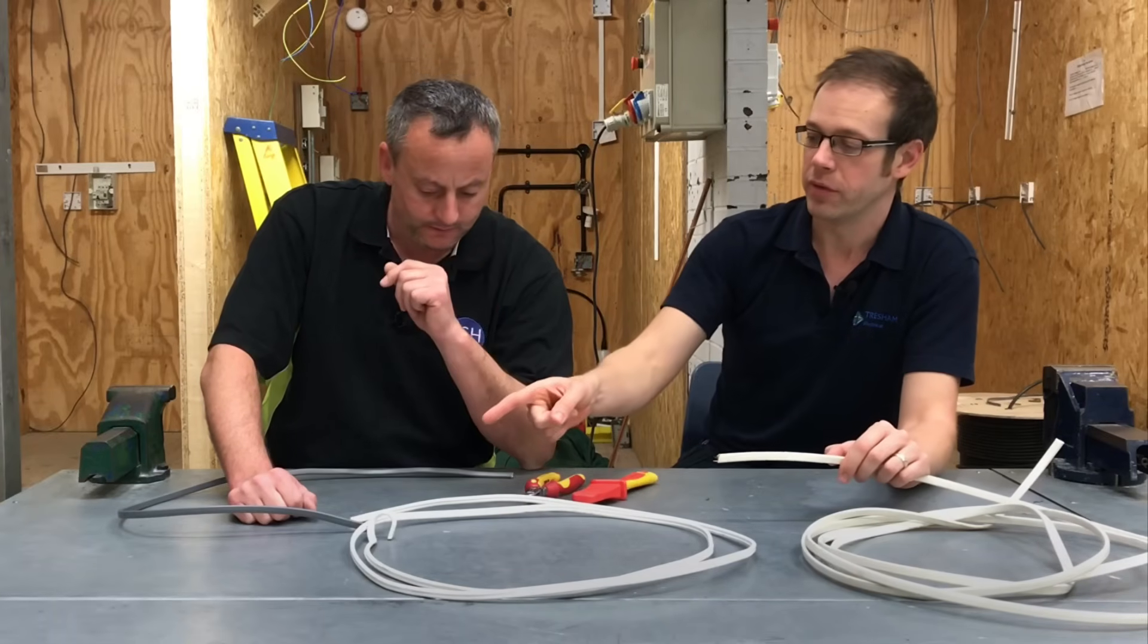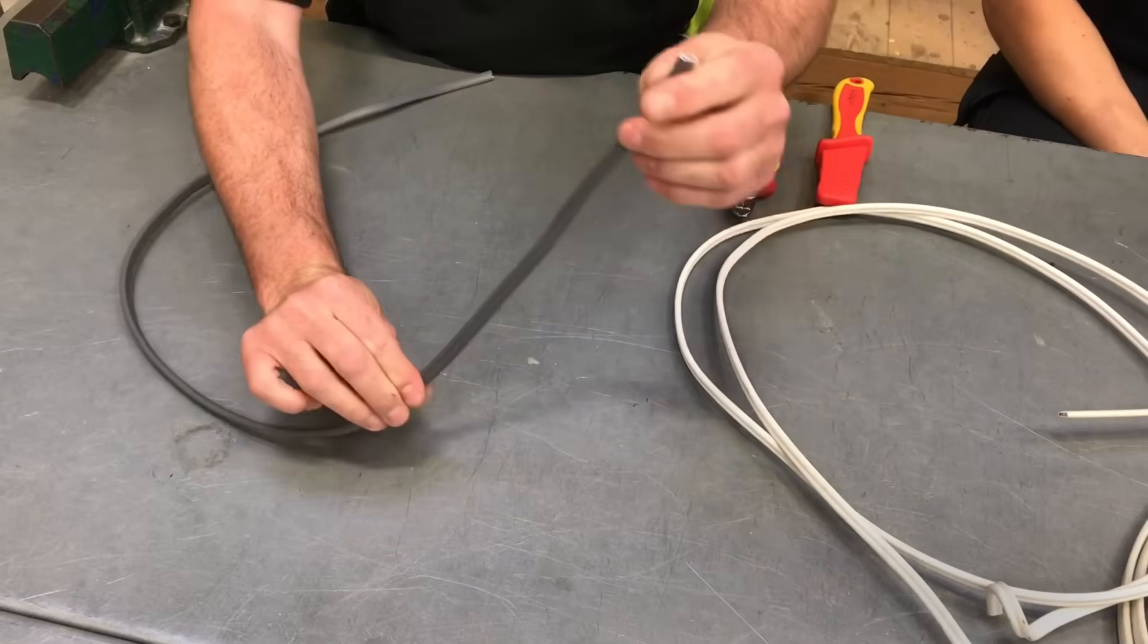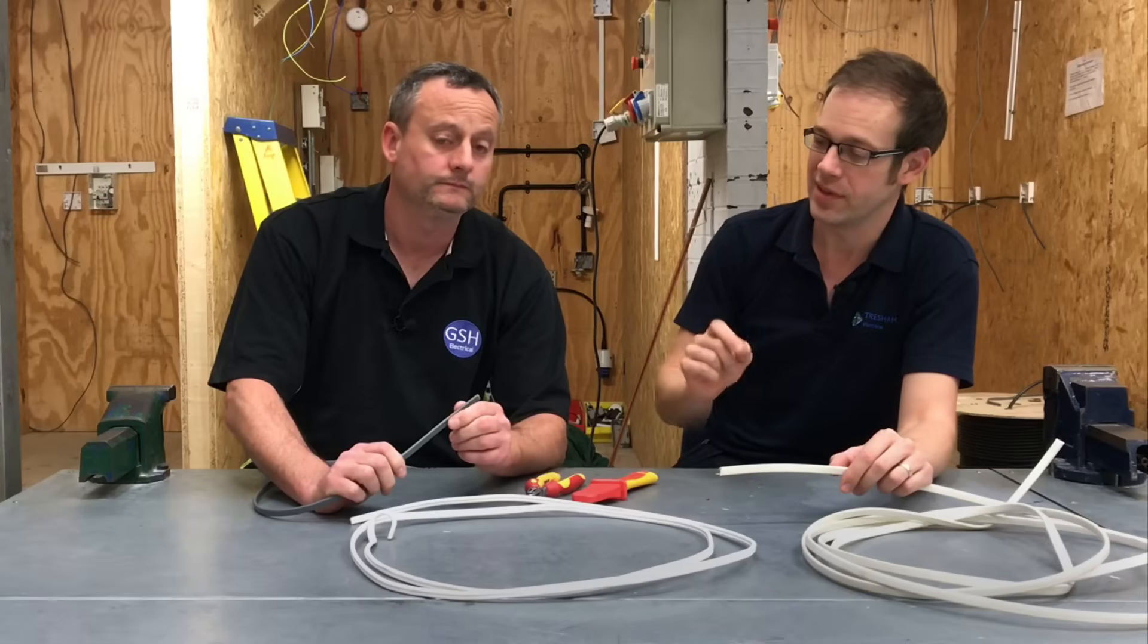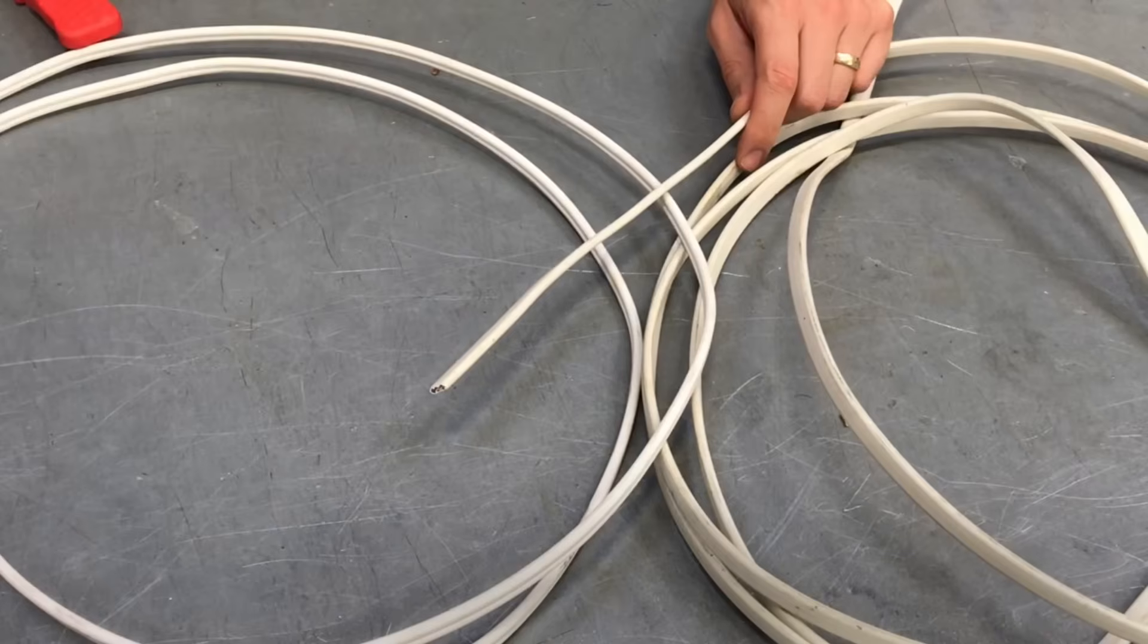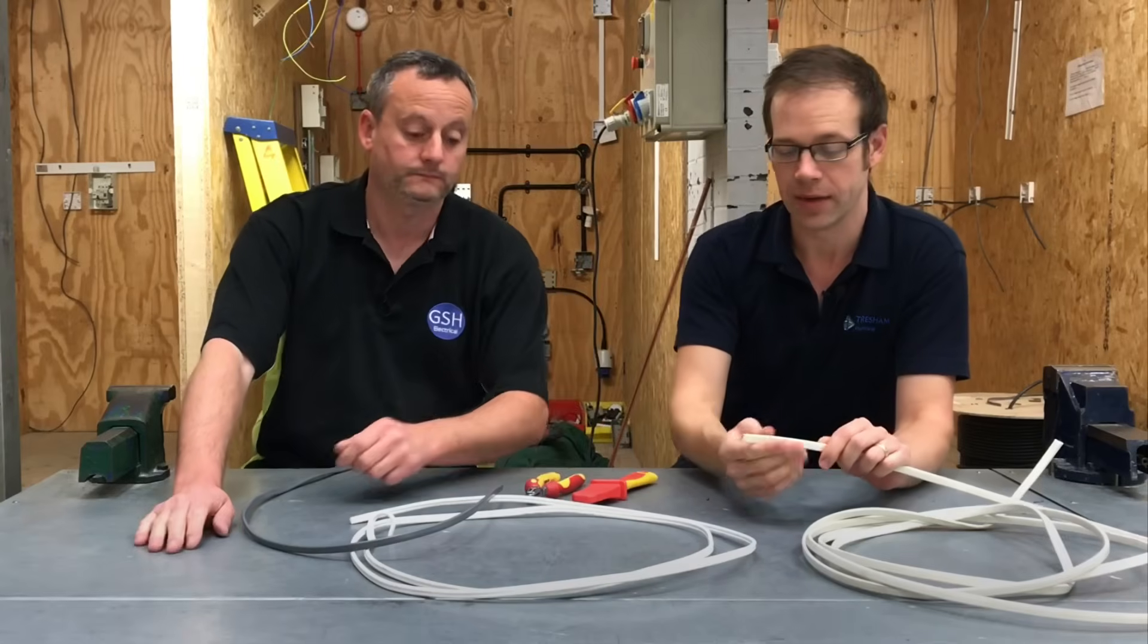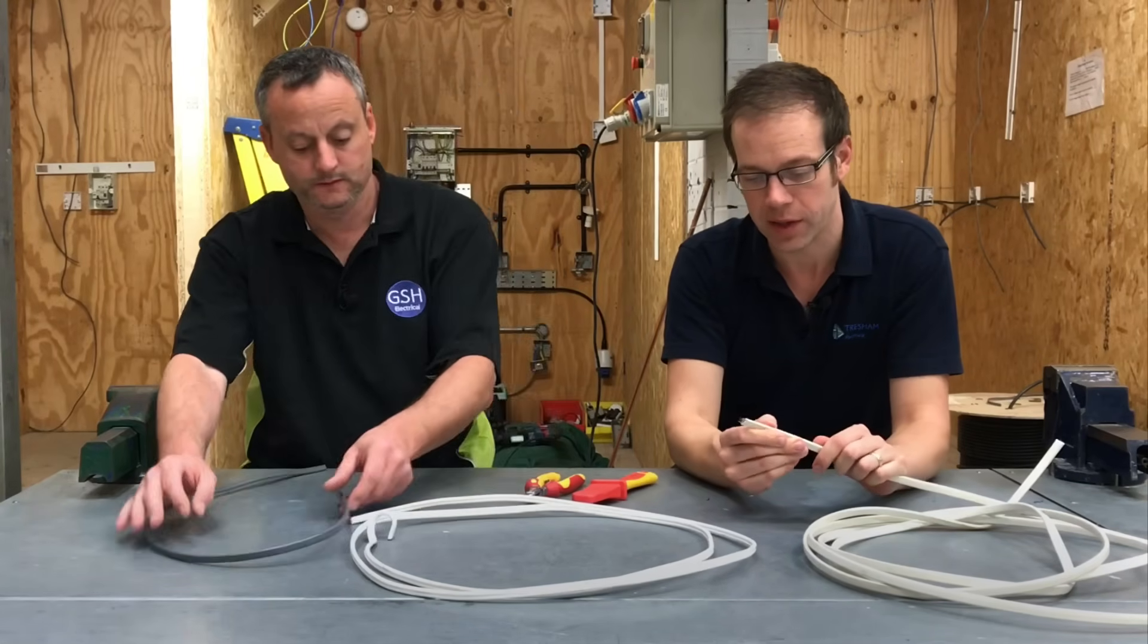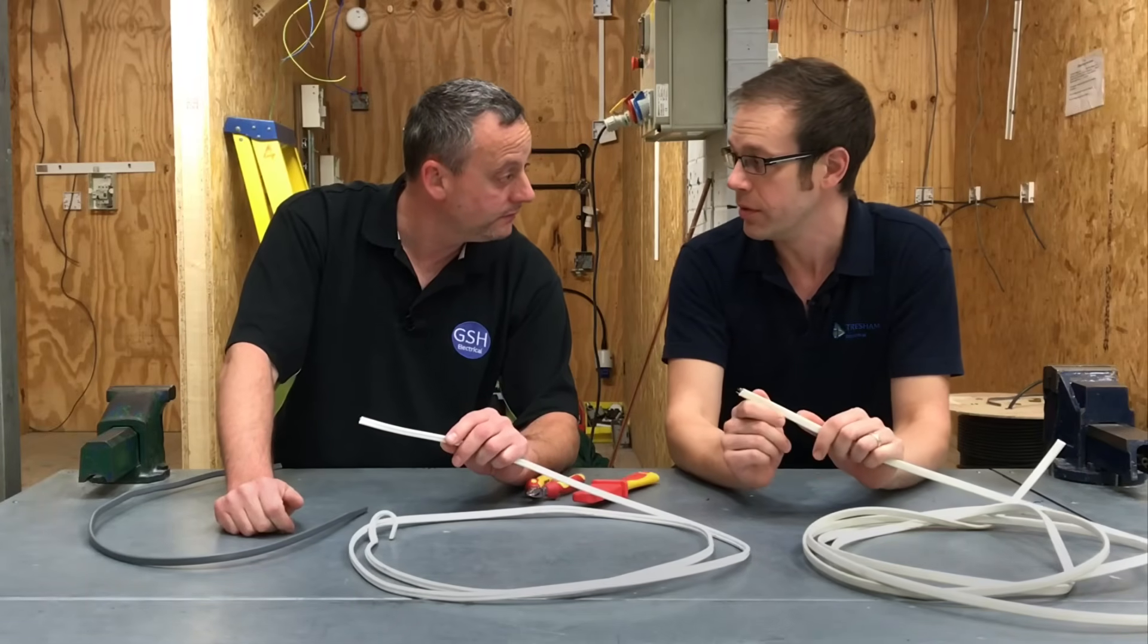The grey cable that you've got in front of you is insulated and sheathed with PVC, which we're quite familiar with. And the designation for that type of cable is 6242YH for harmonised cable. Whereas what we've got here is 6242B cable, and the last letter indicates the material that is acting as the insulation and or the sheath. So this is sheathed with some kind of low smoke and zero halogen material.